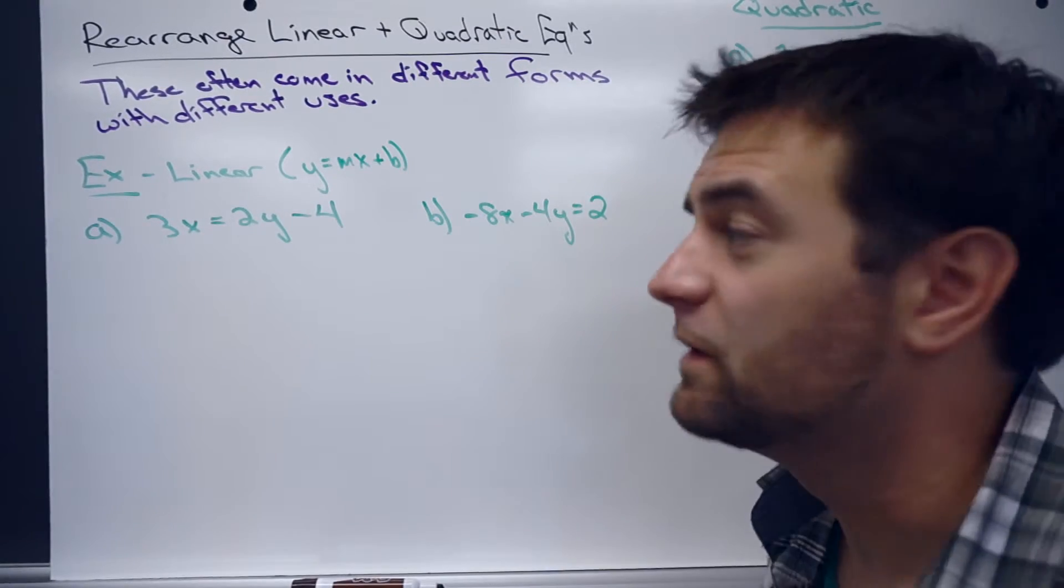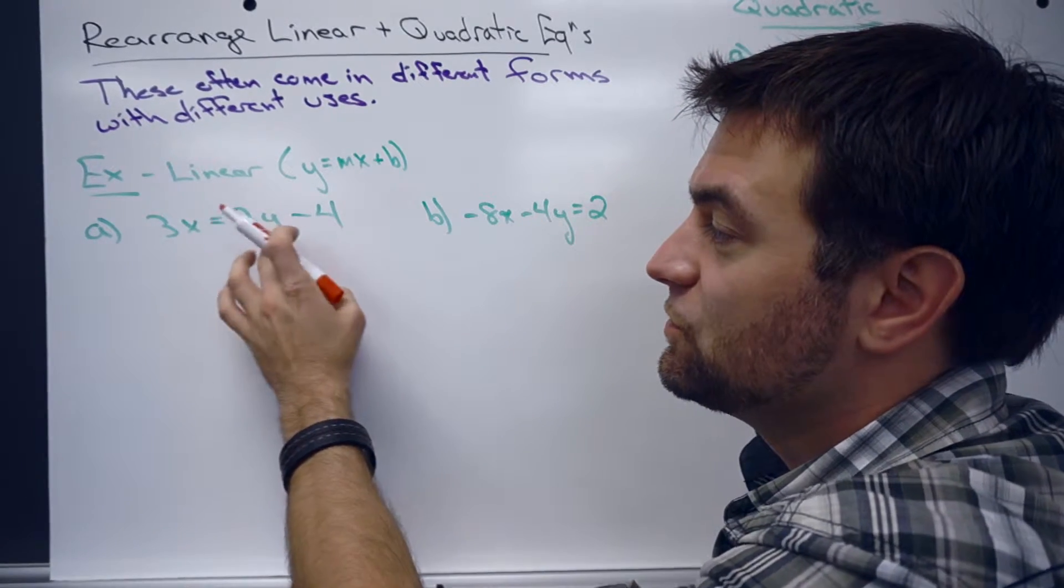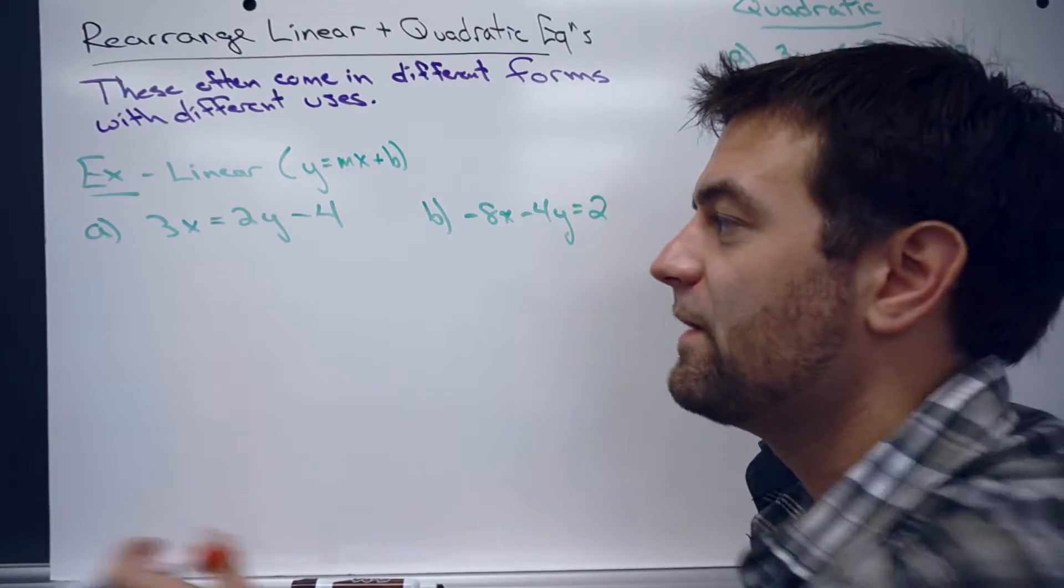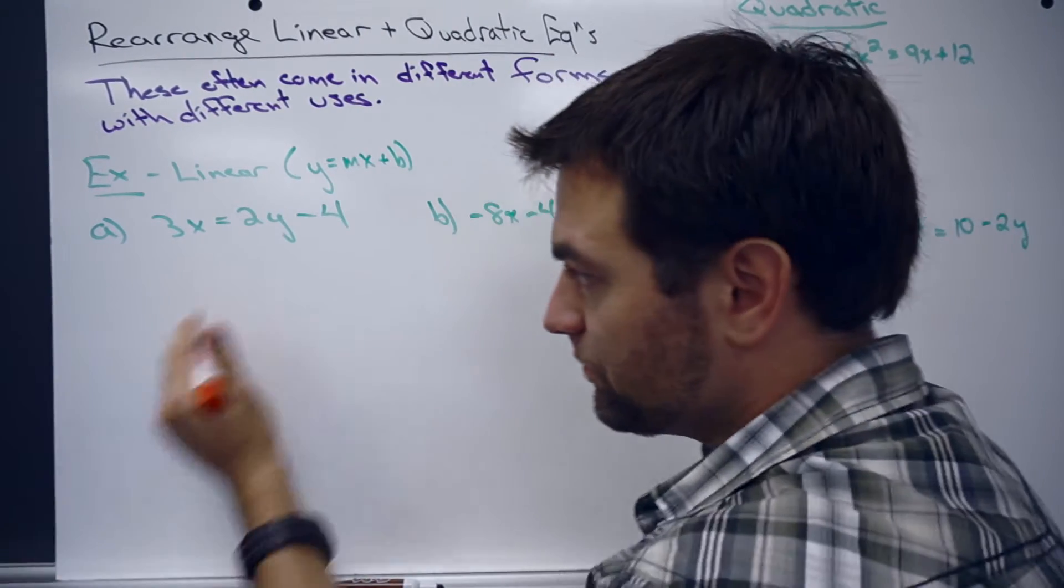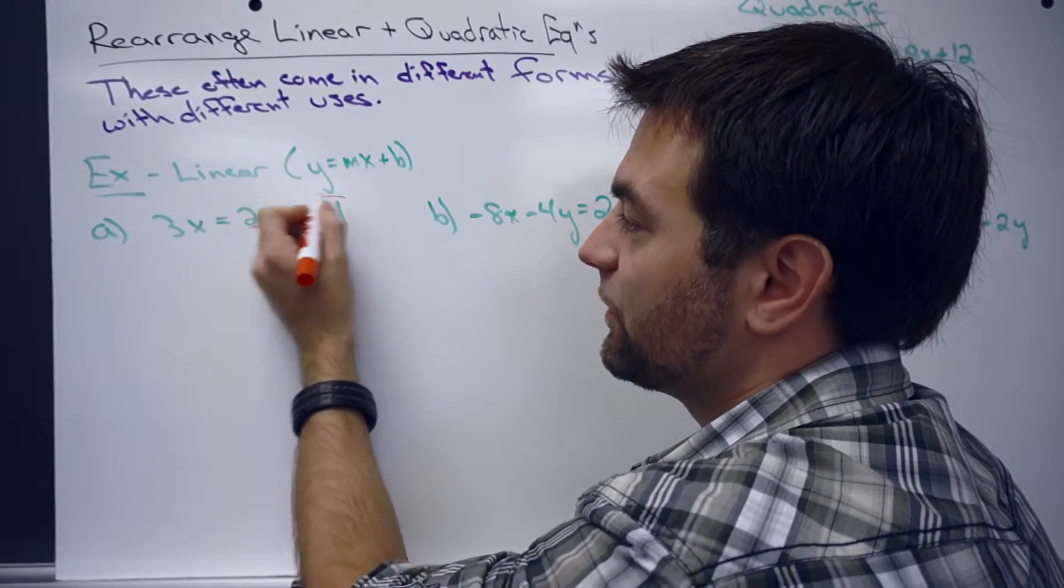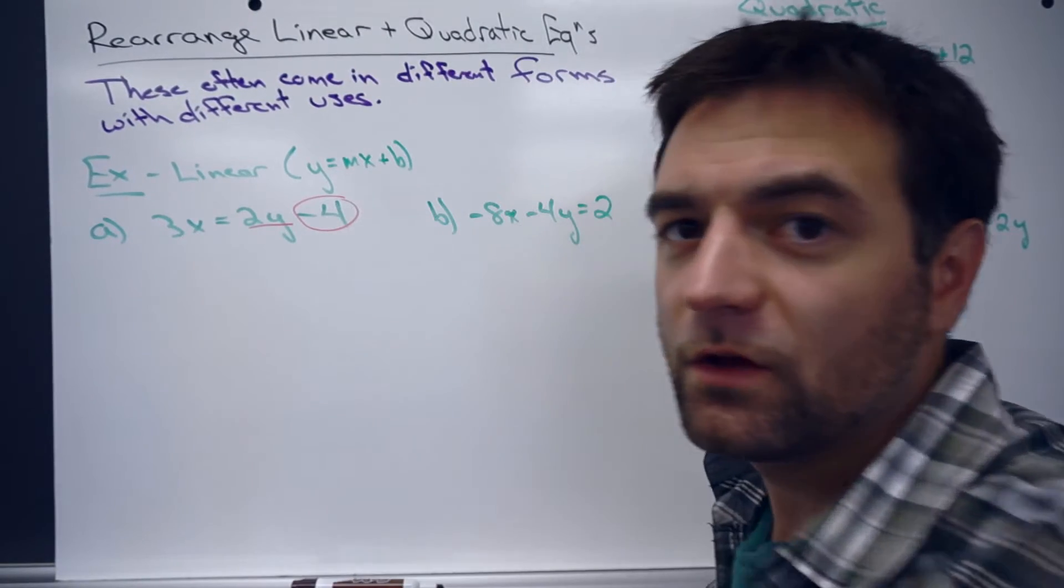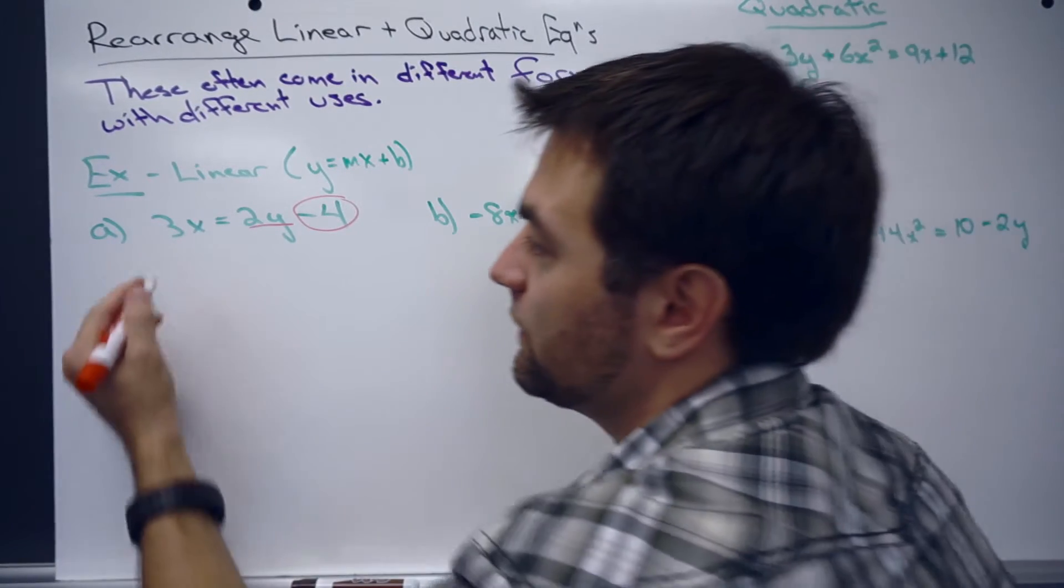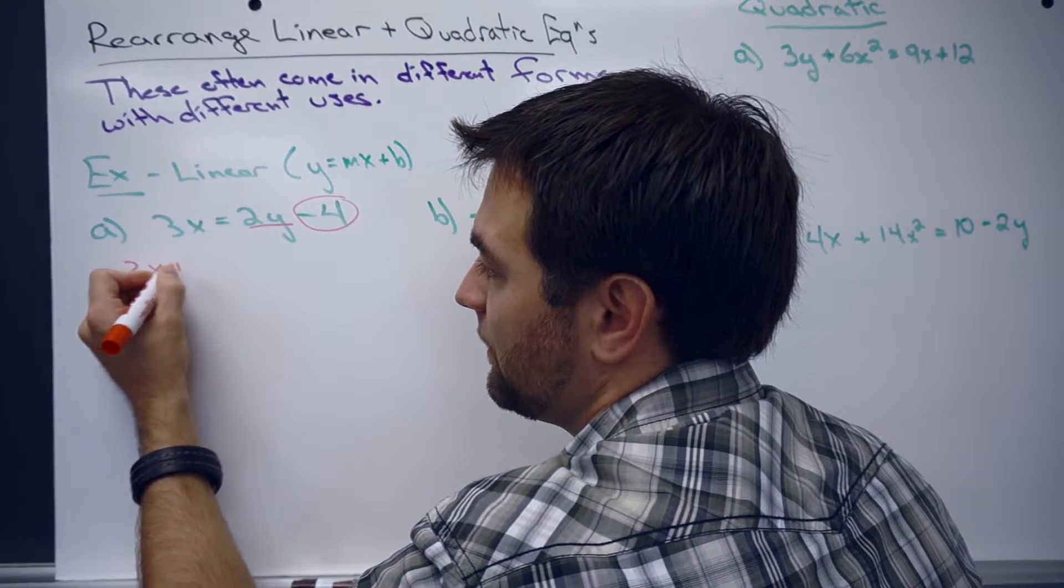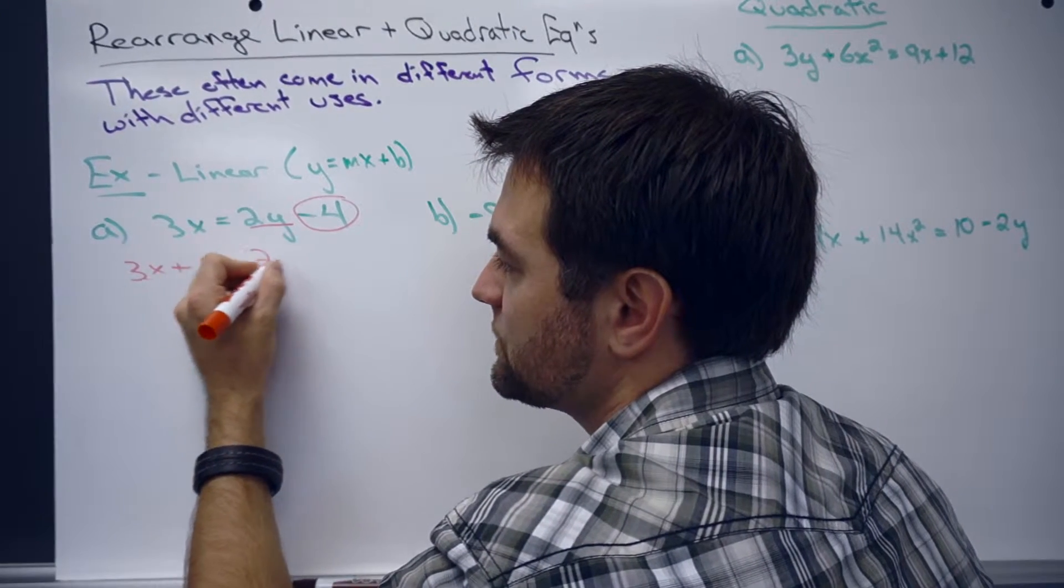So we take a look at this first one. We have 3x equals 2y minus 4. So we want to make it look like this y equals equation. To do that, we've got to get the y by itself. If we move the negative 4 over to the other side, we can get the y a little closer to by itself. We have 3x plus 4 equals 2y.